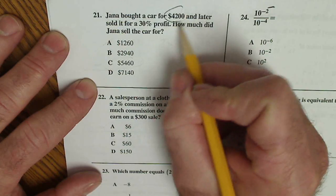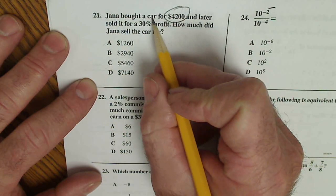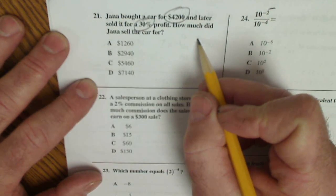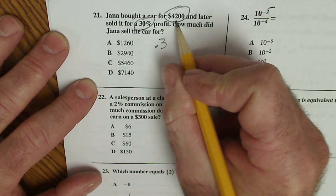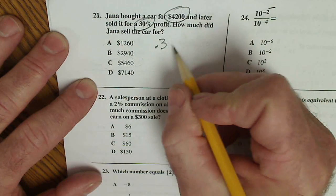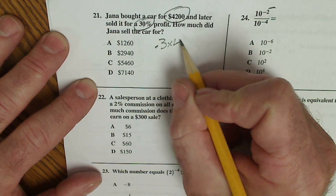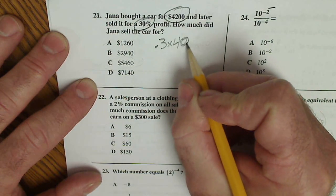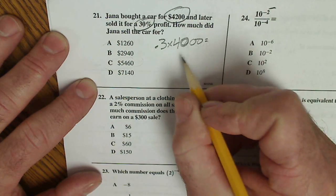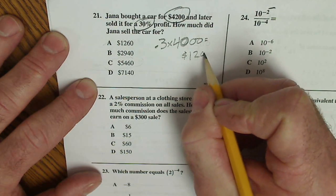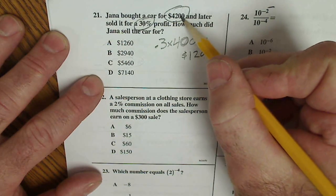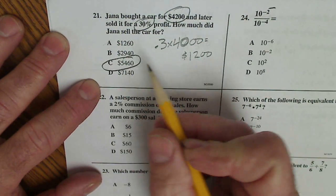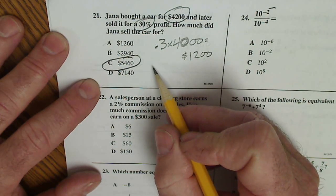So, Jana bought a car for $4,200, later sold it for a 30% profit. If I just do 30% as a decimal .3, I multiply it by the 4,000—it's not quite the same as 4,200, but if I multiply it by the 4,000, I'll get $1,200 profit. $1,200 and $4,000 is $5,400. So, I don't have to do all the computations to get the answer right.